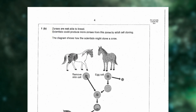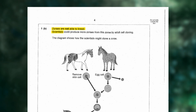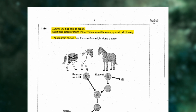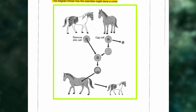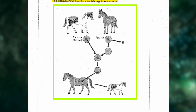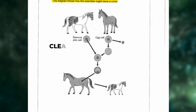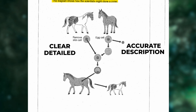The first question reads: sources are not able to breed. Scientists could produce more sources from this source by adult cell cloning. The diagram shows how the scientist might clone a source. Use information from the diagram and your own knowledge to describe how adult cell cloning could be used to clone a source. To get five to six marks you need a clear, detailed, and accurate description of all the major points of how adult cell cloning is carried out.